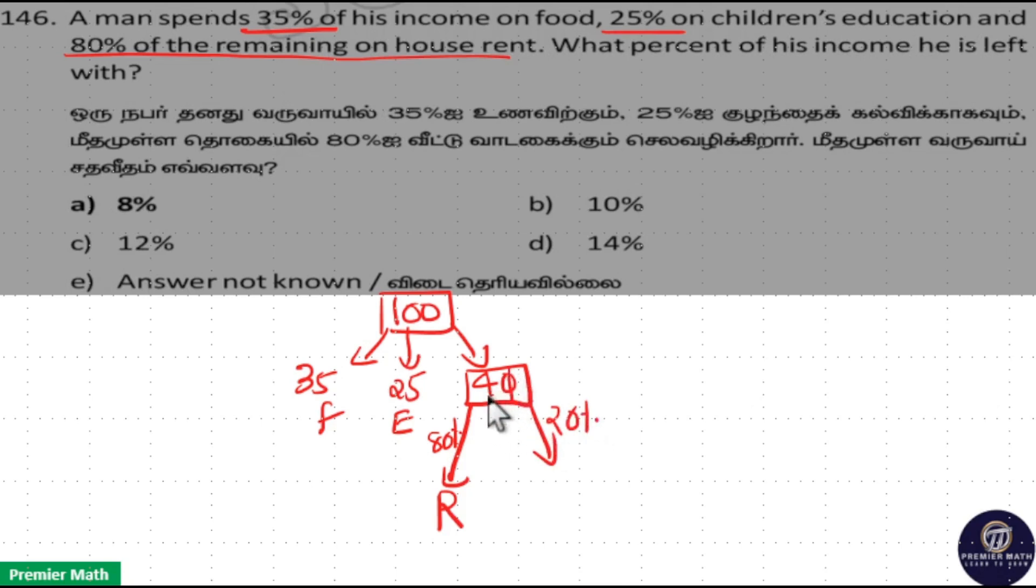Then remaining is 20% of 40. 10% of 40 is 4, then 20% is 8 rupees. So 8 rupees is savings, that is he is left with 8 rupees. Option A is your answer. 8 rupees out of 100 means 8 percent.